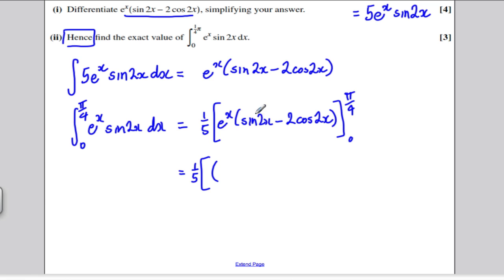If I put pi by 4 in here, I would get sine pi by 2, which is 1. If I put pi by 4 in here, I'd get 2 cos of pi by 2, but cos of pi by 2 is 0. So I would get a 1 here and it would be 1 times e to the pi by 4. So I simply get e to the pi over 4.